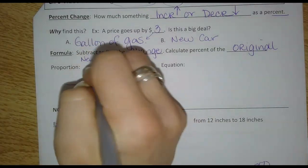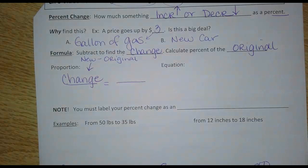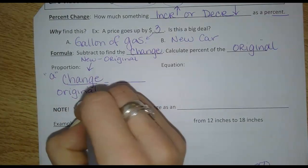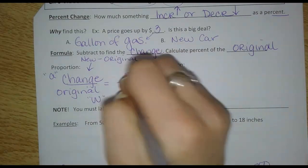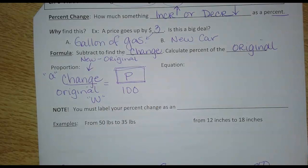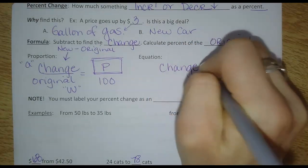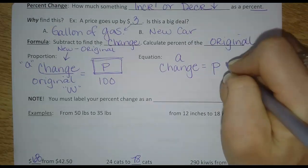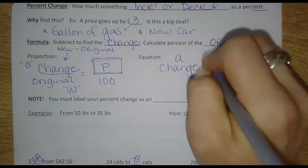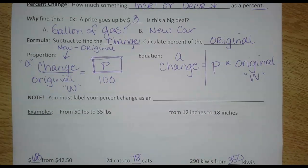So in our example, $3 compared to the price of gas is a big deal. $3 as a percent of the price of the whole car, very small. We can put that into the proportion or the equation. If I'm doing the proportion, I would subtract, and then that number here, the change, would be the part that I'm using. So this goes in the A spot. Change over original in the W spot. And then I'm going to get P over 100. So what we're looking for, the percent change, is this. And with the equation, very similar. Change equals P percent times original. We're going to do some examples with the proportion and some with the equation, so you see it both ways.